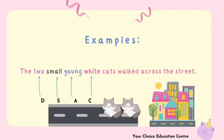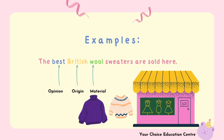Let's look at an example to make it clearer. Example one: 'The two small young white cats walked across the street.' Here, 'two' is the determiner, 'small' is size, 'young' is age, and 'white' is color.